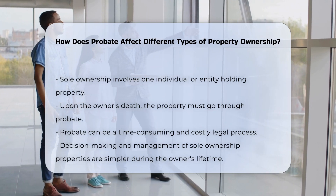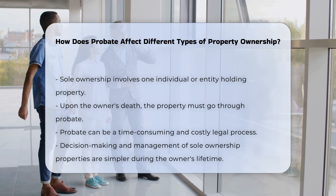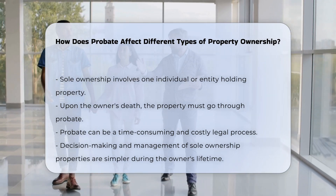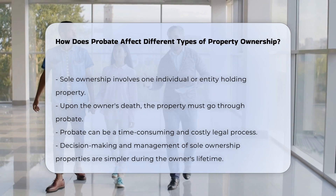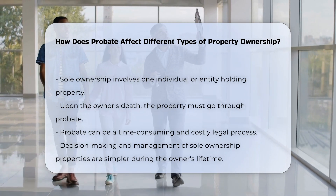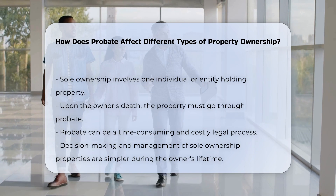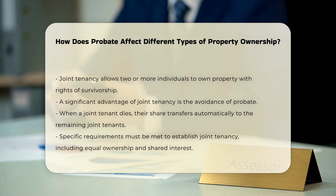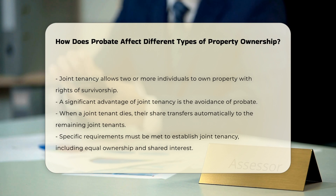Joint tenancy involves two or more people owning a property together with rights of survivorship. A key benefit of joint tenancy is that it avoids probate. When one joint tenant dies, their share of the property automatically transfers to the remaining joint tenants. To establish a joint tenancy, specific requirements must be met, including equal ownership percentages, shared interest in the entire property, and simultaneous establishment of joint tenancy through the same legal instrument.